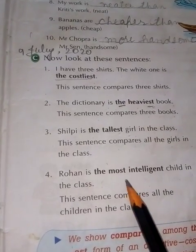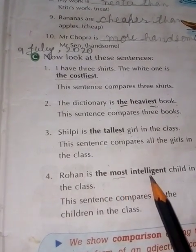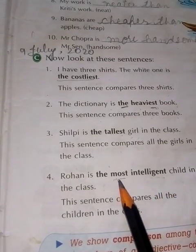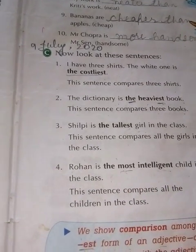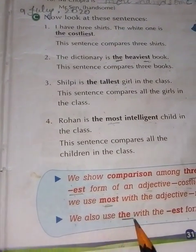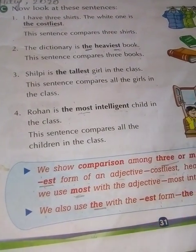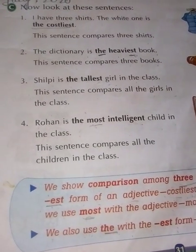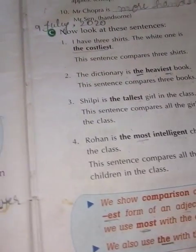यहाँ पर 'most' word use करना है क्योंकि 'intelligent' के साथ 'most' या 'more' use होते हैं। We also use 'the' with the EST form — the costliest, the heaviest — जैसा ऊपर point में बताया था।